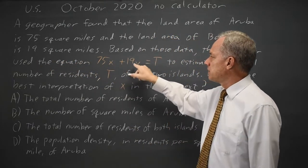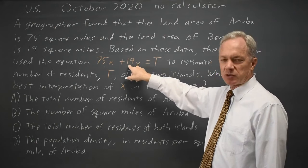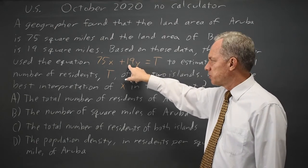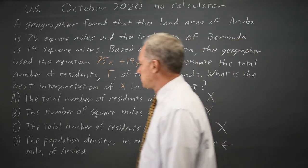And if y is residents per square mile for Bermuda, that times the number of square miles will give you residents for Bermuda, so the sum is t. So choice D makes sense.